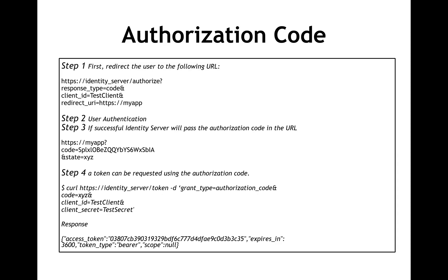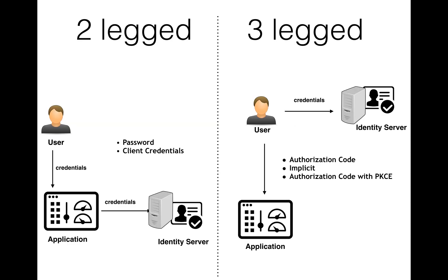By step nine, both the user and the application are authenticated, and the access token can be used to access the API. Looking at the request/response pattern, you hit the identity server with the client ID, the user gets authenticated, and once authenticated you are issued an authorization code. That authorization code can then be exchanged for an access token — the application uses the authorization code and secret, and in response it receives the access token.